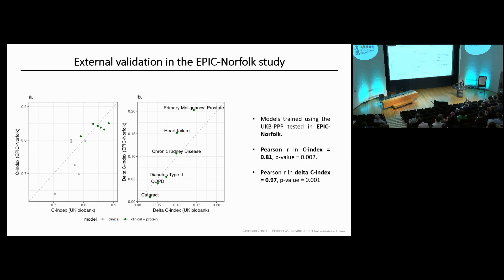The x-axis shows the C index achieved in UK Biobank and the y-axis shows the external validation in Epic Norfolk. For most of our models, validation showed very concordant results, both in terms of the absolute C index and in terms of the increment of the C index when we add the proteins on top of the clinical benchmark.